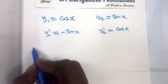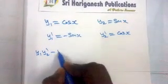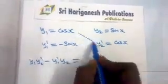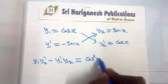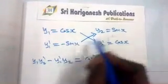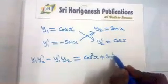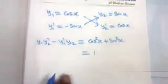Now I am going to find y1·y2' − y1'·y2, which can be obtained using the determinant method. This gives cos²(x) minus (−sin²(x)), which equals cos²(x) + sin²(x) = 1.